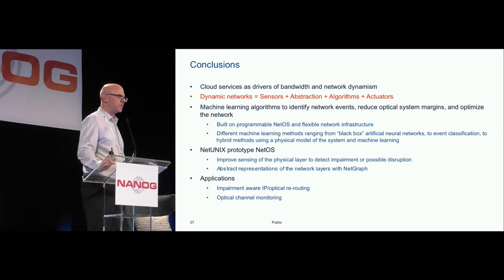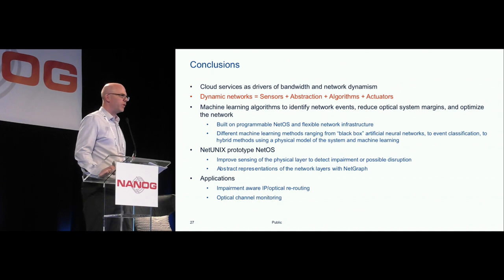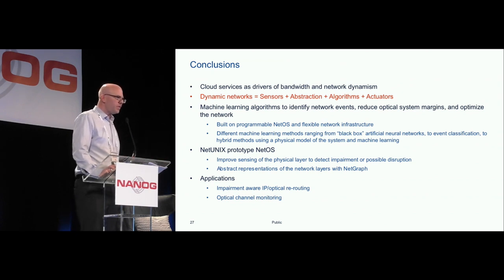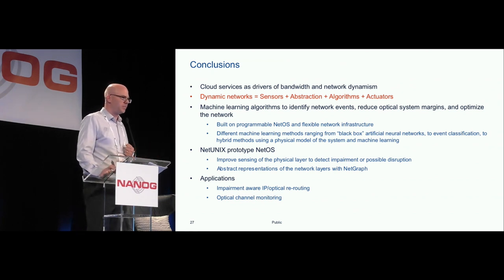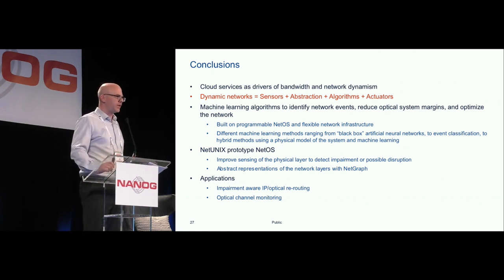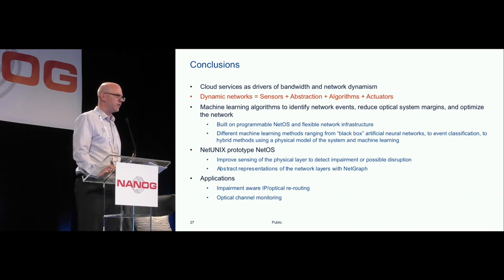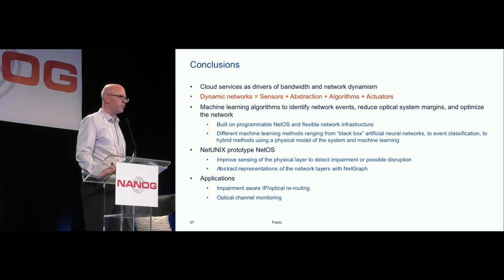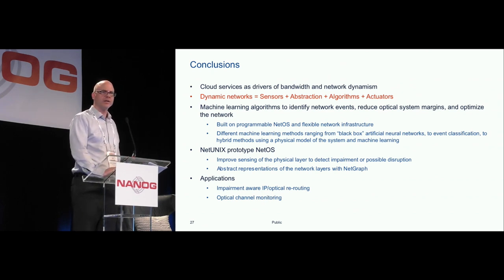In conclusion, cloud services are driving bandwidth and network dynamism. To have truly dynamic networks with machine learning, you need sensors, proper abstraction, algorithms running on top, and actuators. The machine learning algorithms shown can identify network events, reduce optical system margin, and optimize the network, built on a programmable NetOS with flexible network infrastructure. This ranges from black-box artificial neural networks to event classification to hybrid methods combining physical models with machine learning, using the NetUnix prototype NetOS with NetGraph for physical layer sensing and impairment-aware rerouting.